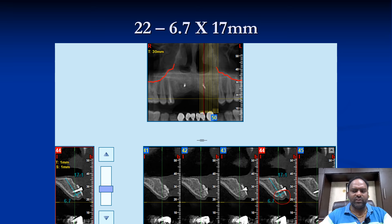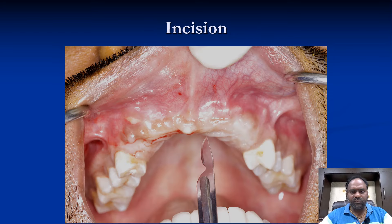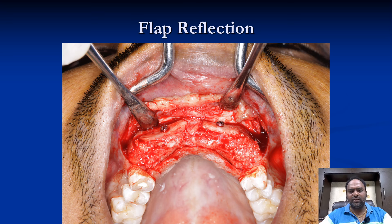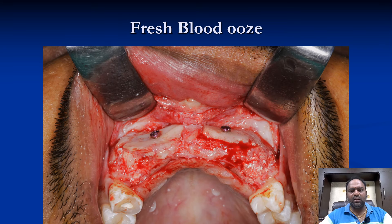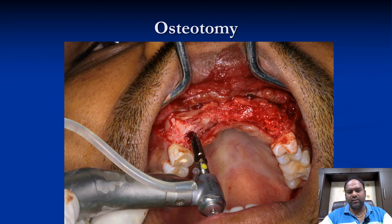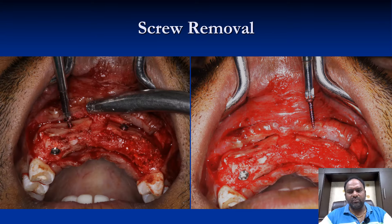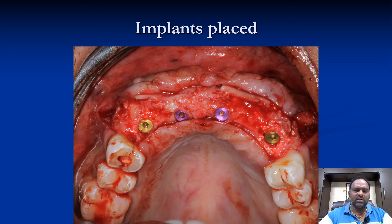With this amount of bone thickness generated, I could easily go ahead with 4.3 Nobel implants. We went in again with the incision, reflected the flap, removed the screws, and performed the osteotomies with the implant drills. This is how we placed the implants — four implants in total were done.